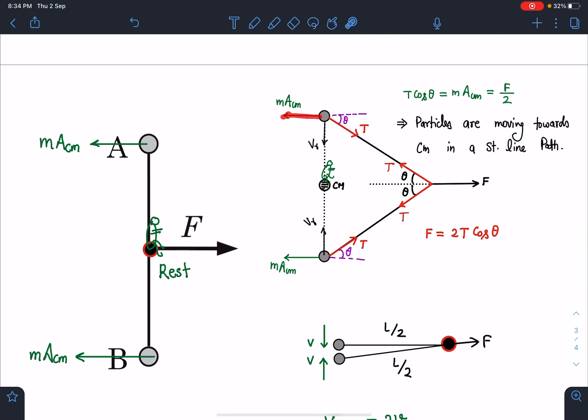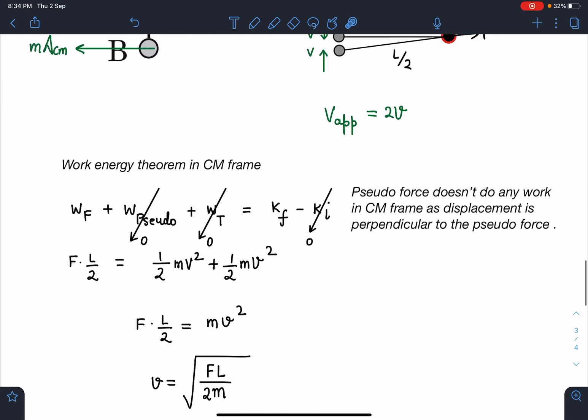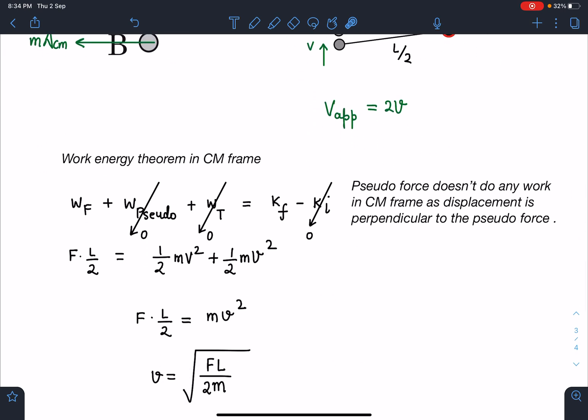All right. So we can see here, since pseudo force is perpendicular to the path followed by the particles in CM frame, pseudo force will not do any work. Tension also overall cannot do any work. So it is only force F which will be doing work here.